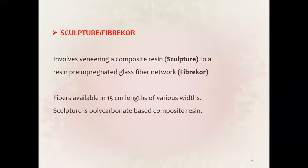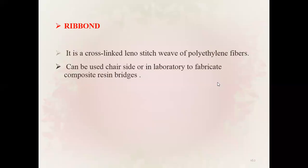Sculpture FRC involves veneering a composite resin to resin in pre-impregnated glass fiber network. Fibers are available in 15 cm lengths in various widths. Sculpture is a polycarbonate-based composite resin. Ribbond is a cross-linked leno stitch weave of polyethylene fibers, and can be used chairside or in laboratory to fabricate composite resin bridges.